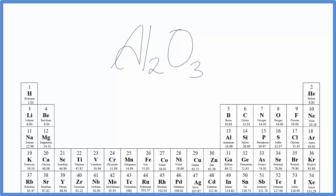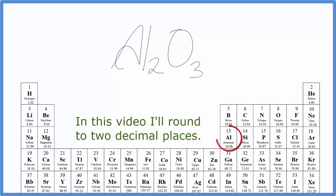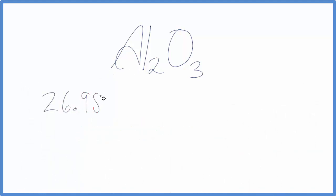On the periodic table, and my periodic table rounds to two decimal points, I have aluminum, which is 26.98 grams per mole, and I won't write the grams per mole here. But I have two aluminum atoms, so I need to multiply that number by two.